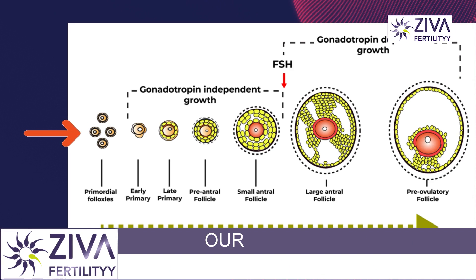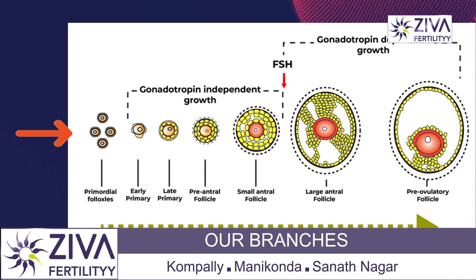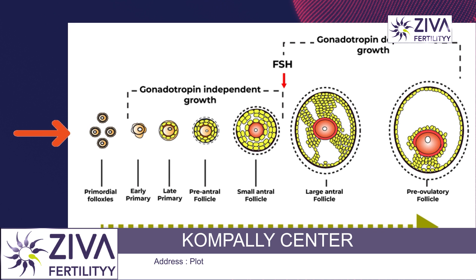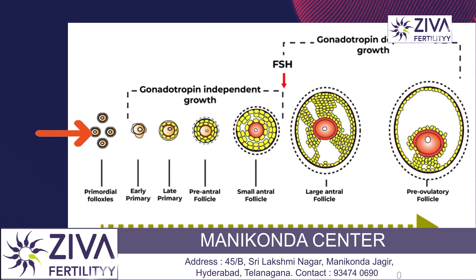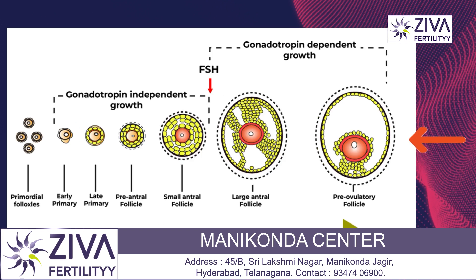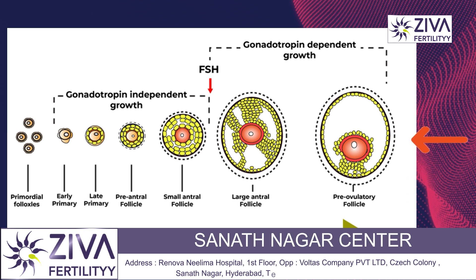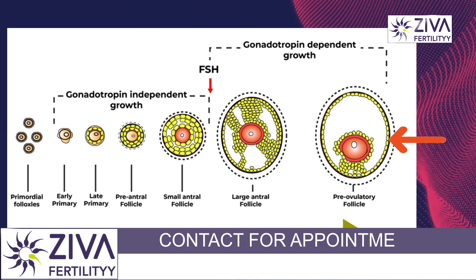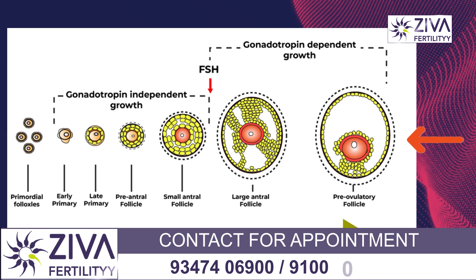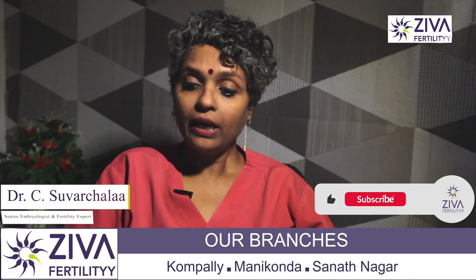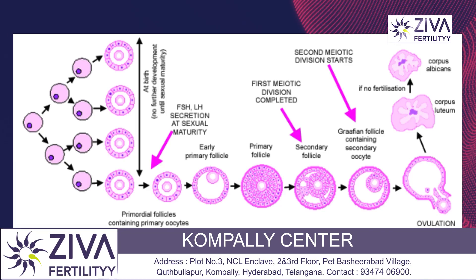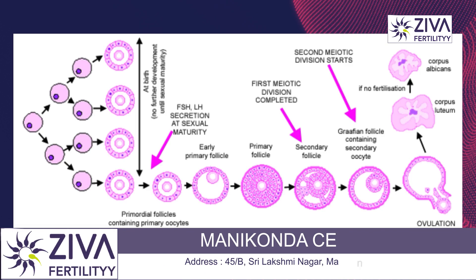You will see that eggs are divided into a lot of types. They are all in the primordial stage that you see in the picture. As they are selected every month and respond to the hormones, they grow through different stages of development: early primary, late primary, pre-antral follicular stage, small antral follicular stage, large antral follicle, and pre-ovulatory follicle. The primordial follicles are sleeping, and the pre-ovulatory follicle is the one that is going to ovulate and has a chance of fertilization and forming a baby.